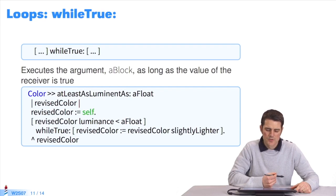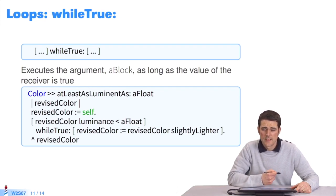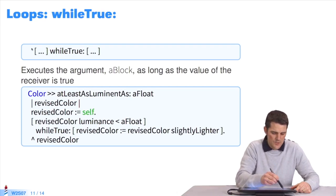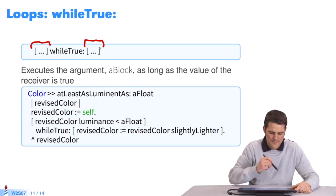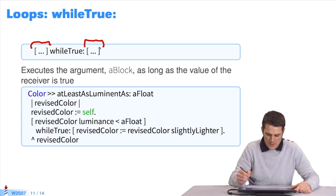This is another message, while true. While true can also create loops, but it is a message you send to a block. It is defined over the class block. This is the receiver block. There's a block of arguments here. I give you a concrete example from the class color.